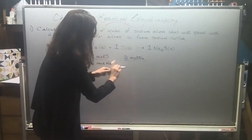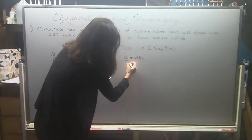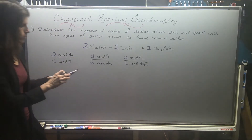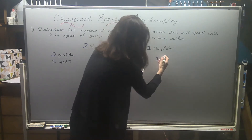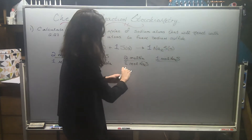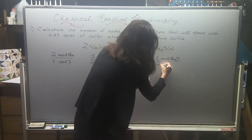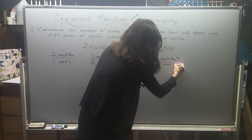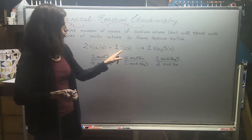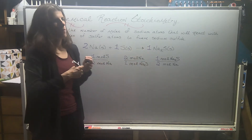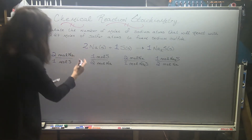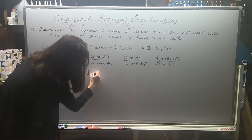...will react to produce one mole of sodium sulfide. That too can be flipped: one mole of sodium sulfide requires two moles of sodium. There's one more combination — we can create a conversion factor between the sulfur and the sodium sulfide. When you have more products and more reactants, it's between every single one of them. The last pair would be one mole of sulfur per one mole of sodium sulfide.